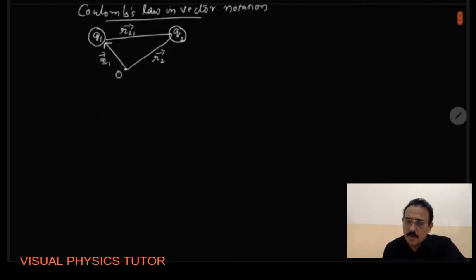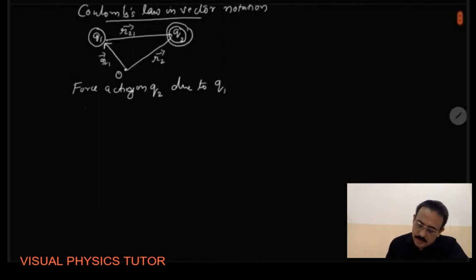Now here since we are doing it in the vector form, we need to understand the vector notation. So the force acting on Q2, on charge Q2, this is the charge Q2 due to Q1, it can be written as F vector 21 is equal to 1 by 4 pi epsilon 0 q1 q2 by R21 square and R21 cap. So this is equation 1.